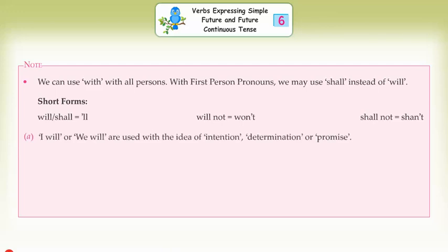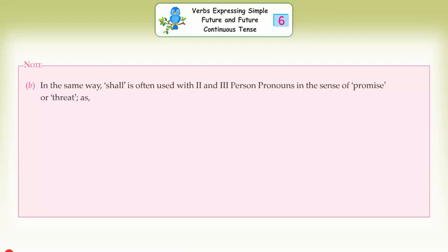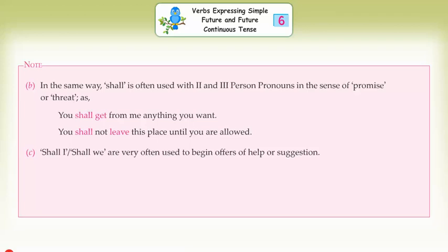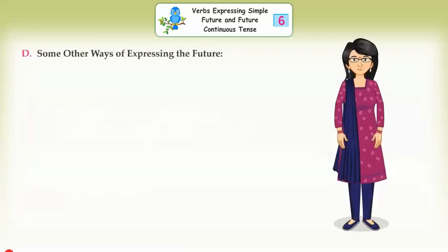A. 'I will' or 'we will' are used with the idea of intention, determination or promise: I will play here. We will vote for you. B. In the same way, 'shall' is often used with second and third person pronouns in the sense of promise or threat: You shall get from me anything you want. You shall not leave this place until you are allowed. C. 'Shall I' and 'shall we' are very often used to begin offers to help or suggestions: Shall I serve you cold drinks? Shall we go on a picnic?